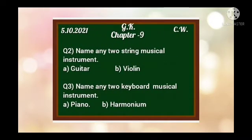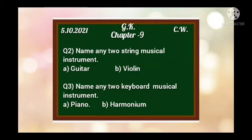Now write down Question 2: Name any two string musical instruments. String musical instruments are the instruments which have strings on them and we play them by touching their strings. The names of any two string musical instruments are: A — Guitar, and B — Violin.